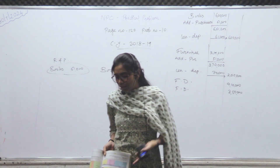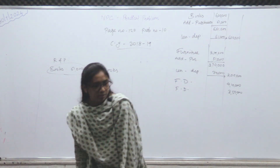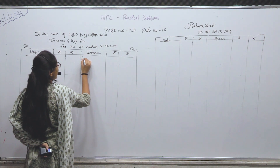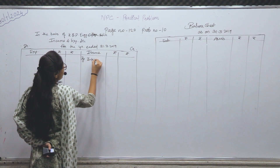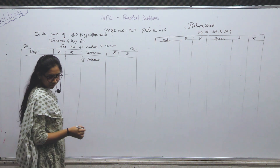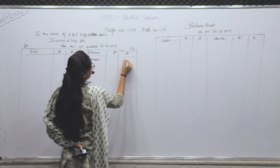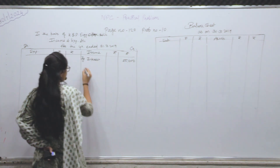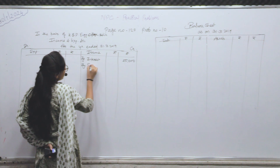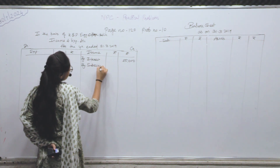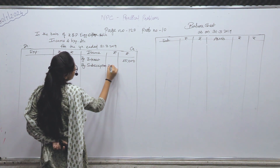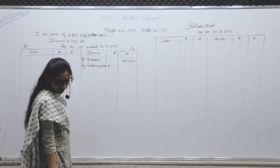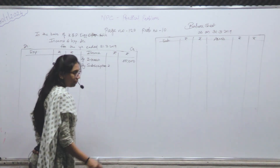अभी आपको prepare करना है income and expenditure और balance sheet। Income में फटाफट कर लेते हैं। Interest — by interest — tell me the amount: 55,000। अगर adjustment होगा तो बताओ। Next — subscription — income में — 28,300 — inner में लिखोगे क्यूंकि एक adjustment है।